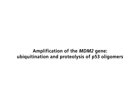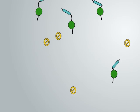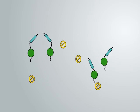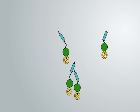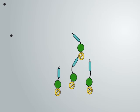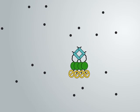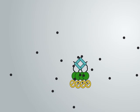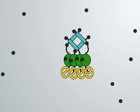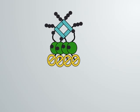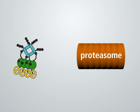Amplification of the MDM2 gene. Ubiquitination and proteolysis of P53 oligomers. MDM2 is an E3 ubiquitin ligase. After binding to the N-terminal domain of P53, MDM2 is involved in the formation of multi-ubiquitin chains from ubiquitin monomers, indicated as black dots. MDM2 is involved in the formation of multi-ubiquitin chains of P53 oligomers. Ubiquitinated P53 is degraded in the proteasome.